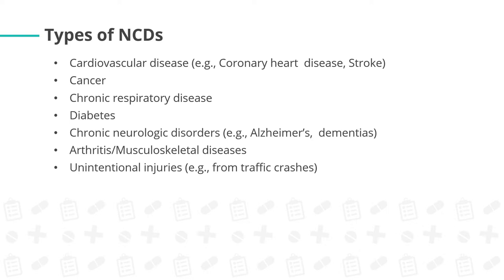We have types of NCDs. First is cardiovascular diseases, such as coronary heart disease, stroke, etc. Cancer — we have many types such as prostate cancer, liver cancer, cervical cancer, and breast cancer. Chronic respiratory diseases such as asthma and bronchitis. Then diabetes — we have types 1 and 2. Then chronic neurologic disorders such as Alzheimer's and dementias. Arthritis or musculoskeletal diseases. And unintentional injuries, for example from traffic crashes and accidents.